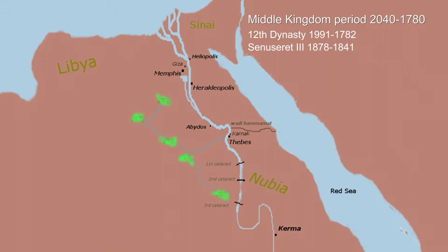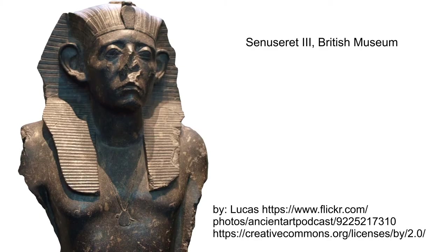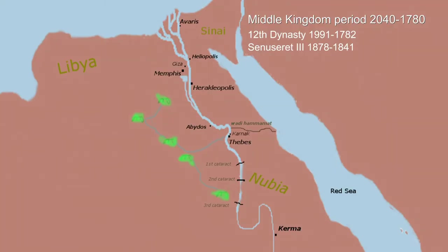He set up a stele on the border between Egypt and Nubia saying: 'I have built all of this, I have gained all of these lands. Any son of mine who protects these territories and these boundaries is a great son of mine, but anyone who does not protect them is no son of mine.'